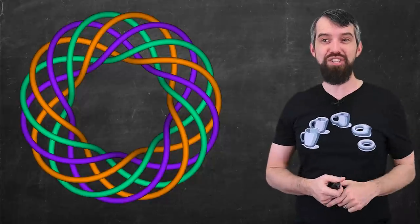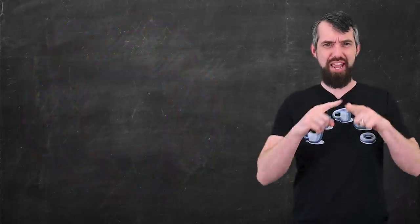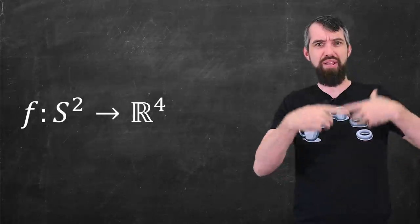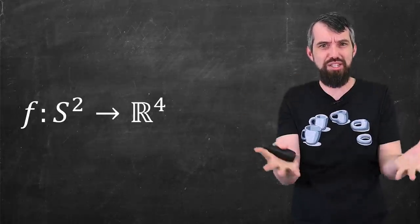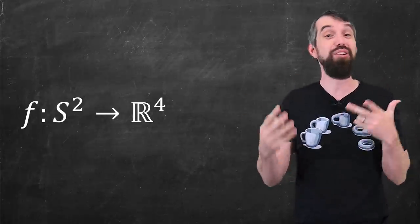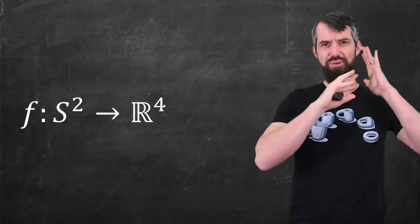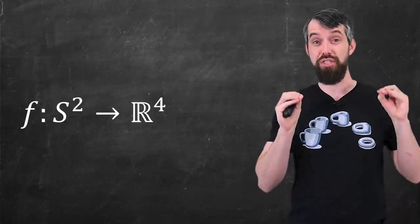Or you could consider high dimensional analogs, like instead of taking a one dimensional circle embedded in three dimensions, what about a two dimensional sphere embedded in four dimensions? What kind of interesting properties does that have? So there are a lot of interesting questions for the future.